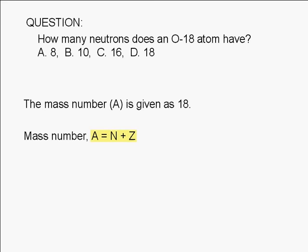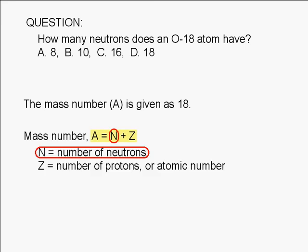In the equation shown here, N is the number of neutrons and Z is the number of protons, which is just the atomic number.